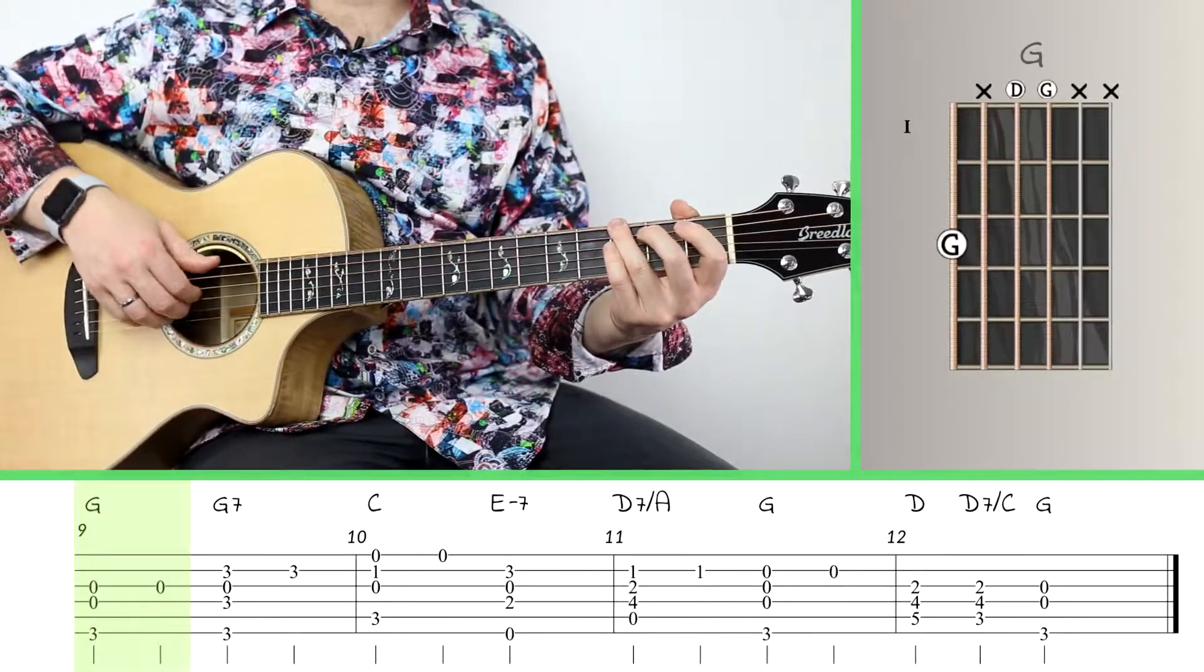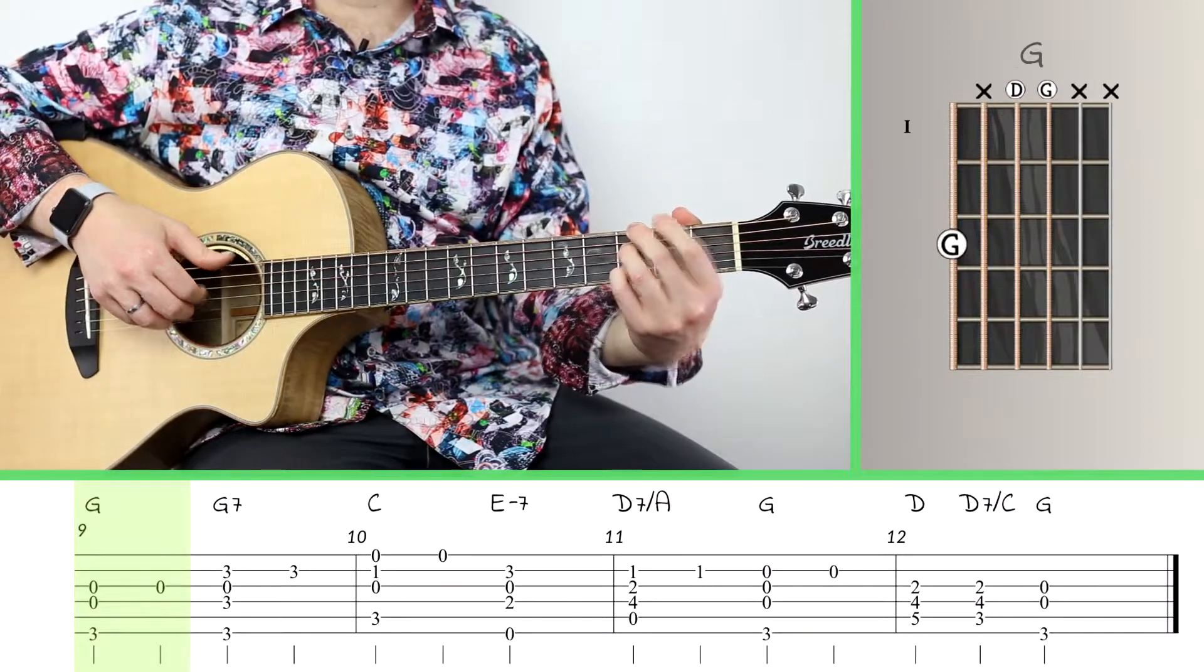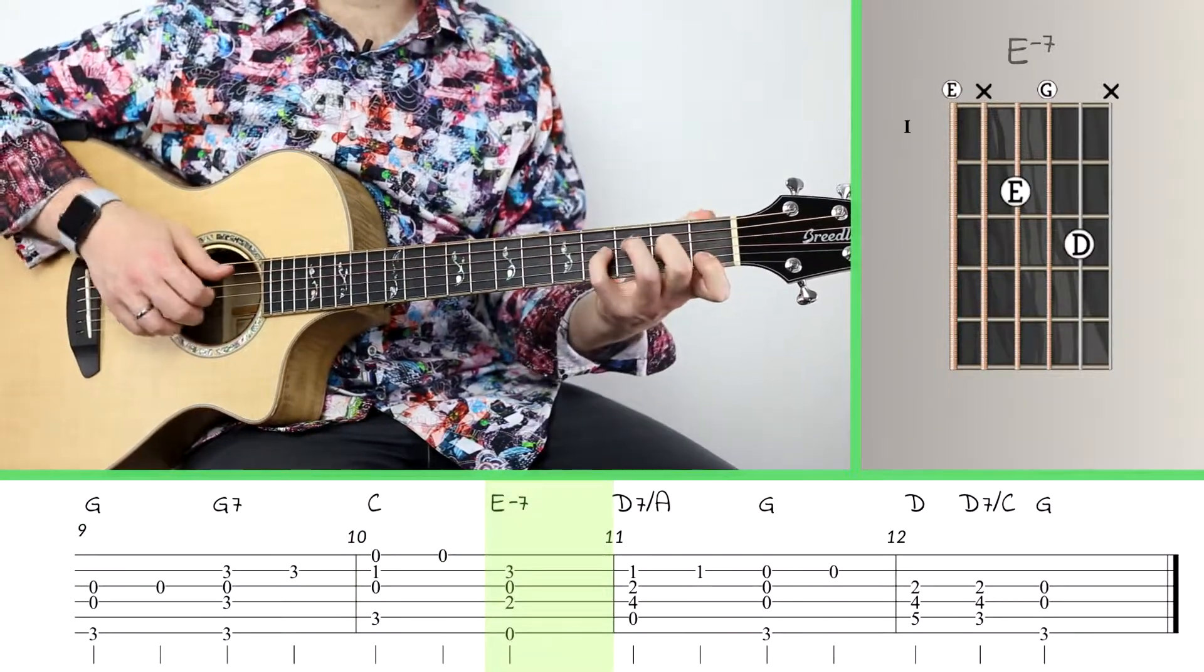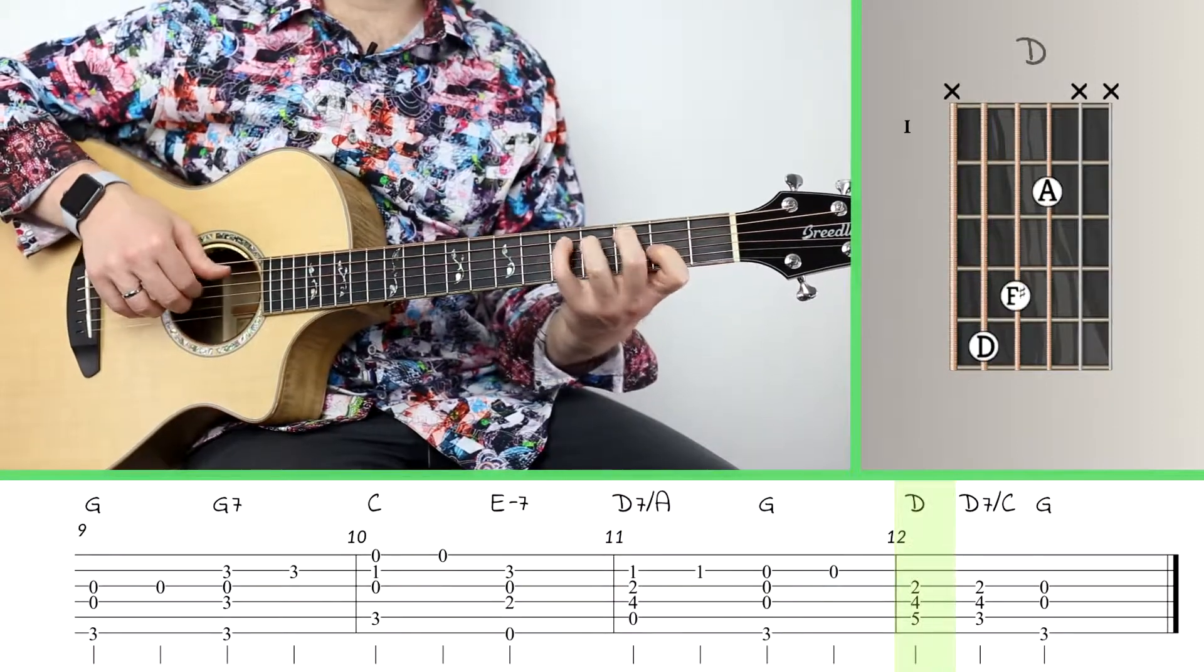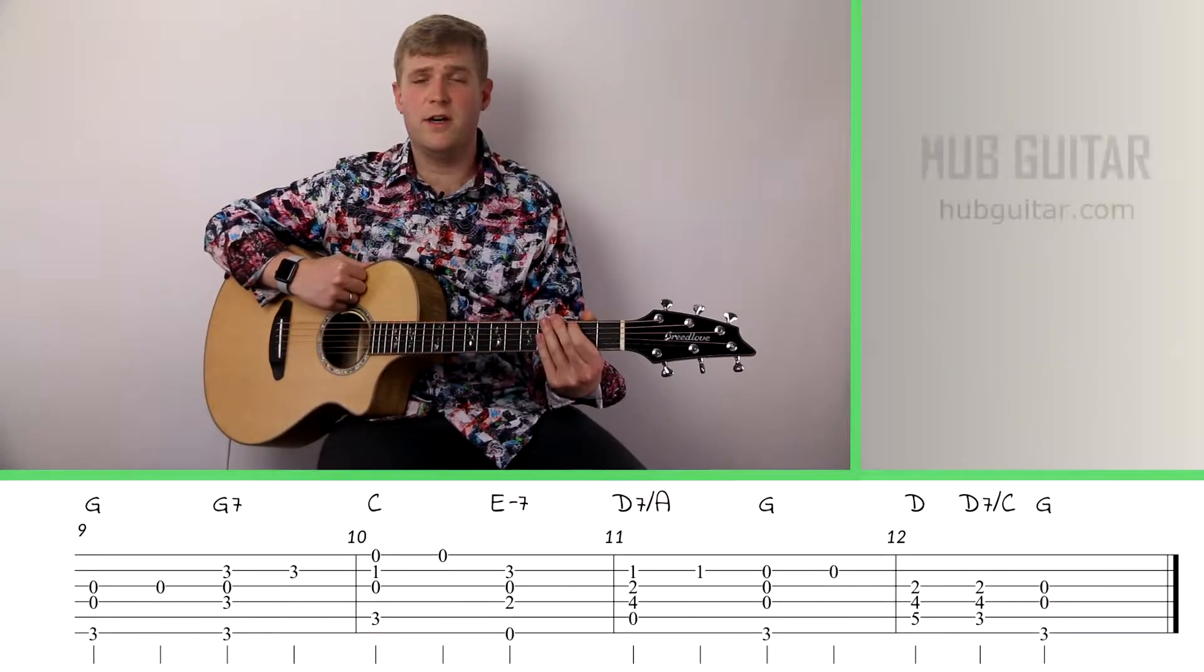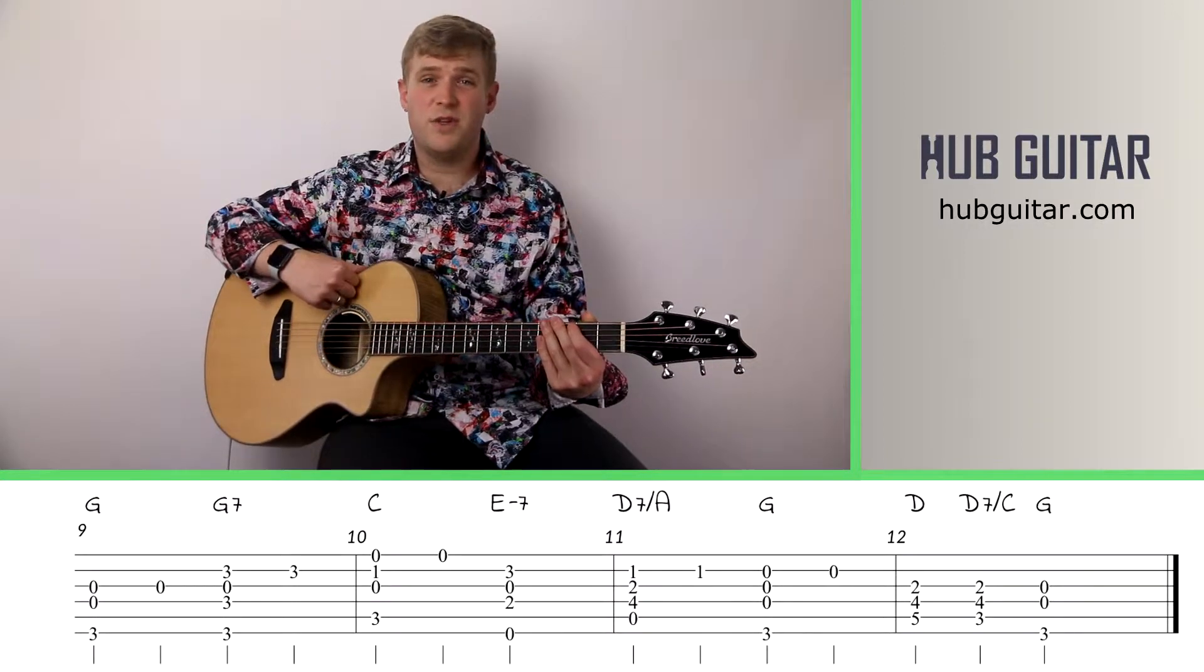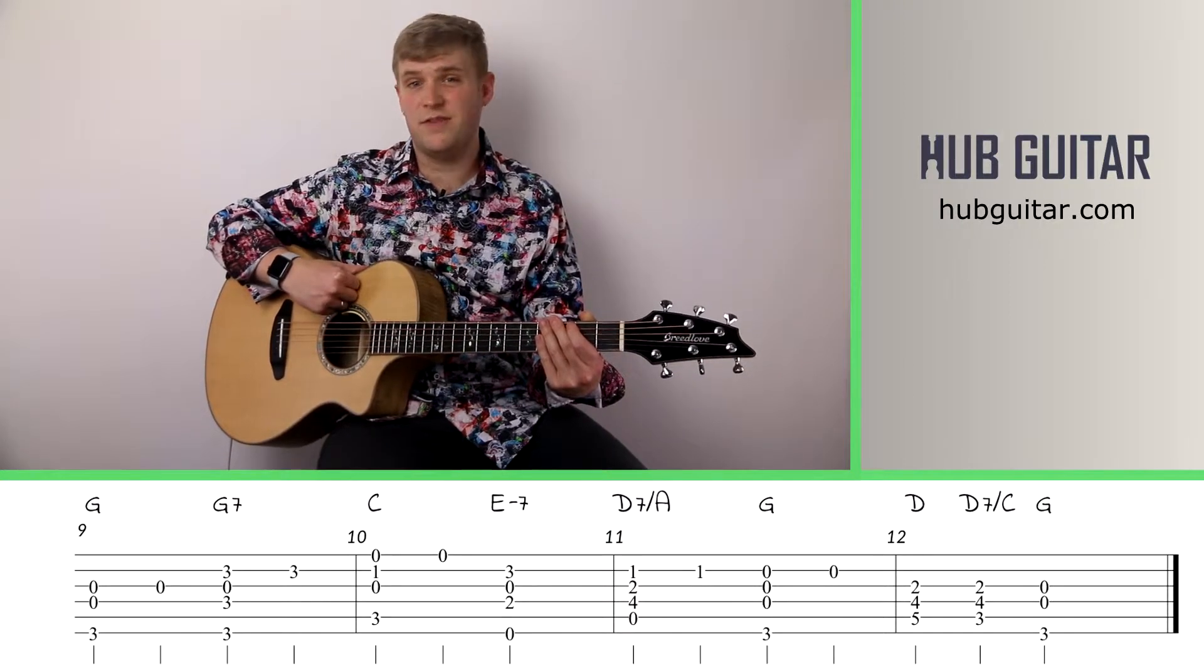Now on measure nine, we keep going. We've encountered this content before on measure one. And measure 10 is the same as measure two. So it's pretty much the same after that. In fact, the last four measures are really just a repeat of the first four measures. That's why it's so great to see the repetition in the music you're playing. You'll realize there's only actually four to six measures of unique content and the rest of it is just repeated stuff.